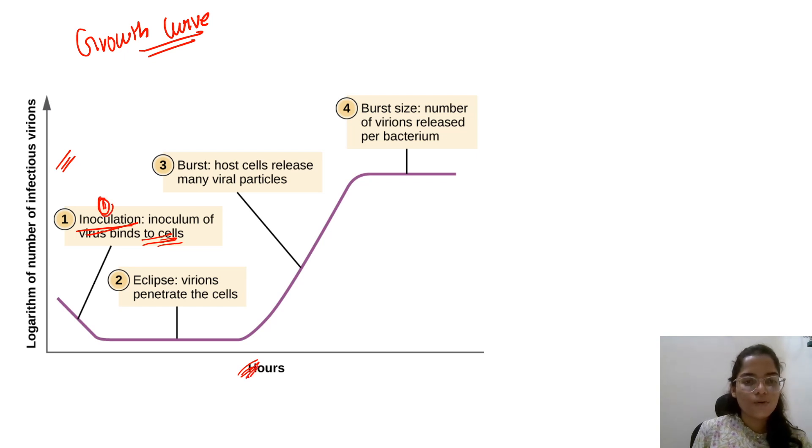The second is eclipse phase. Eclipse phase means the virus penetrates. It is fusion, it is entry into the cells. So in this stage, the growth of the virus is stable. Rather than stable, it is constant. It means it is not growing. It is a straight line.